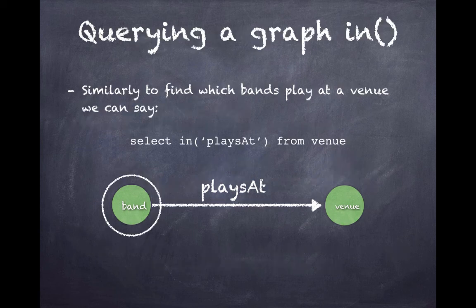So select IN will select vertices that point IN to that vertex. So select IN playsAt from venue to give us a band, or a set of bands.